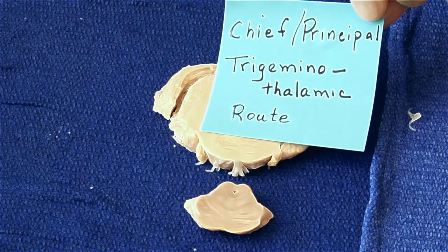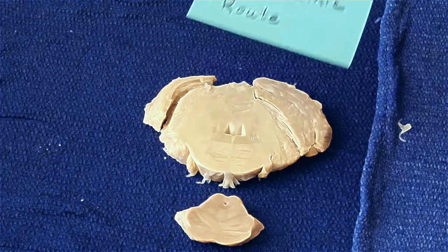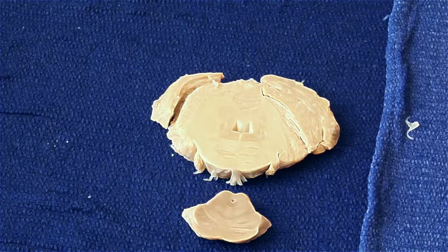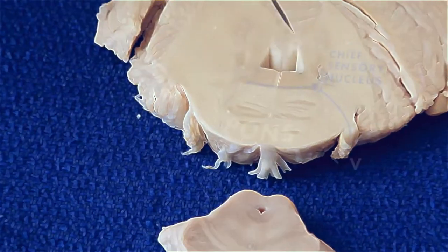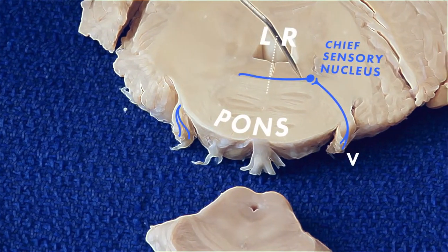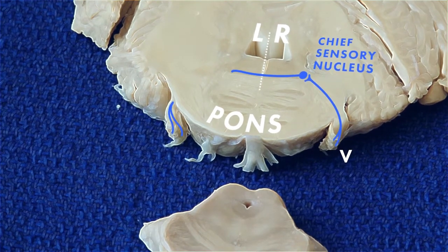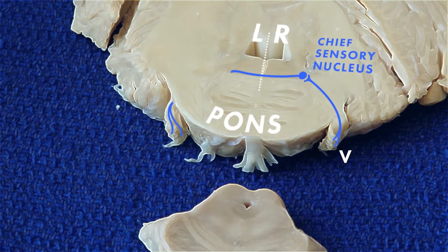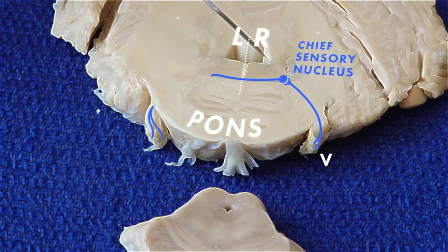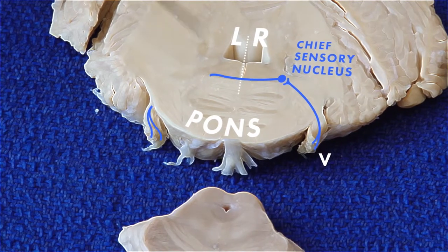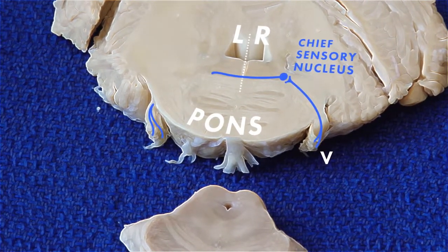Now we're going to consider vibration, joint position, and fine discrete touch and how that enters. Similarly, it comes in through the right trigeminal nerve. And right here at the level where it enters, there is a nucleus, the chief or principal sensory nucleus of the trigeminal. There, the second neurons cross to the other side and are located close to the medial lemniscus that we saw coming from the spinal cord connections.